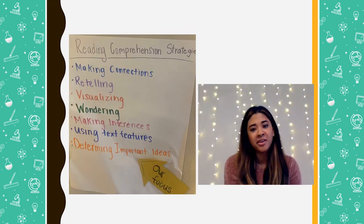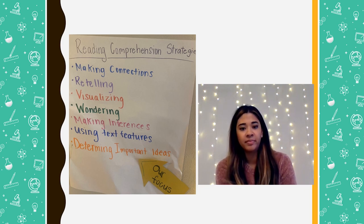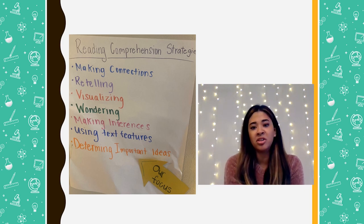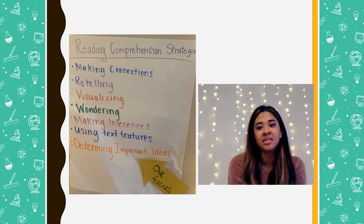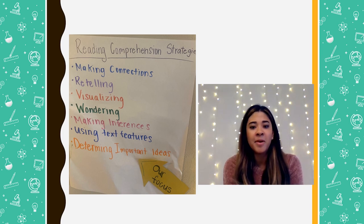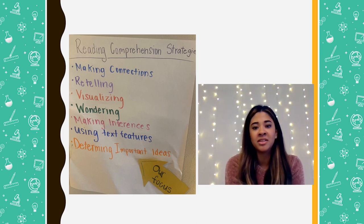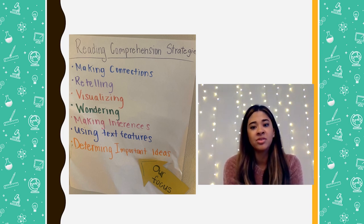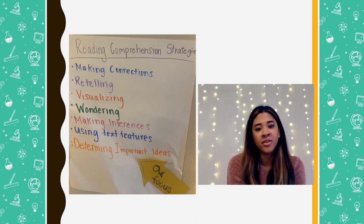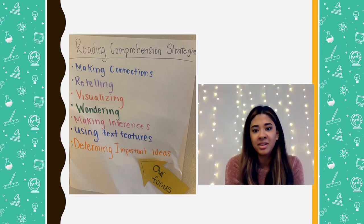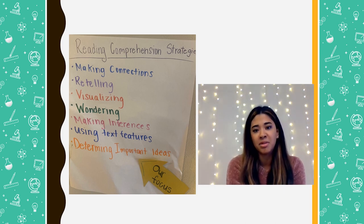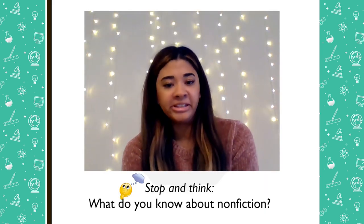Here are reading comprehension strategies that we have been using this year. We are adding determining important ideas to that list. Thinking about what is important is a strategy that readers use. When an author writes articles or stories, there are things they really want the readers to learn and to remember.